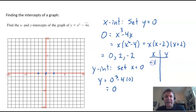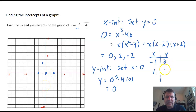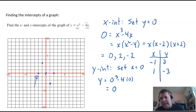Let's put in negative 1. Negative 1 cubed is negative 1, and negative 4 times negative 1 is 4. So I get negative 1 plus 4, which is 3. I've got a point at (negative 1, 3). Then let's put in positive 1: 1 cubed is 1, minus 4 times 1 is minus 4, so 1 minus 4 is negative 3. And so we get a function that looks like that.